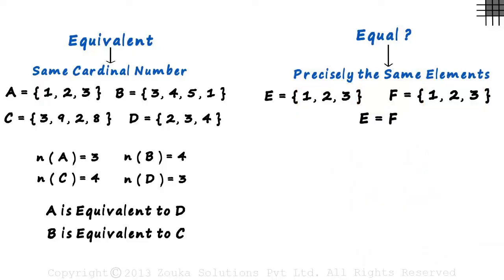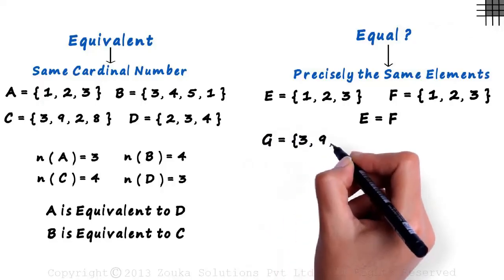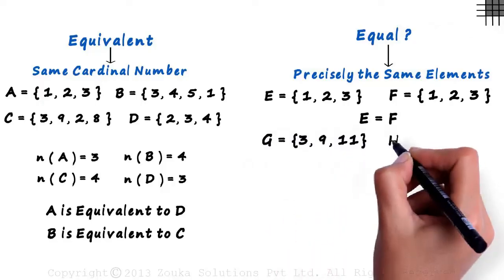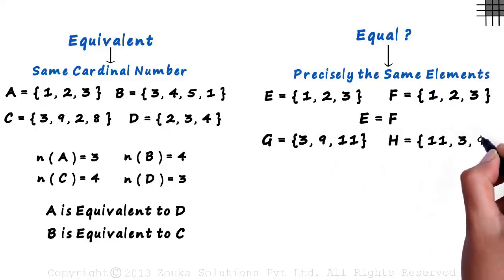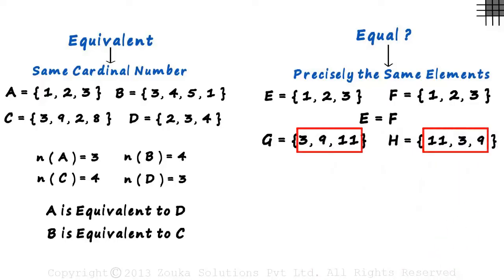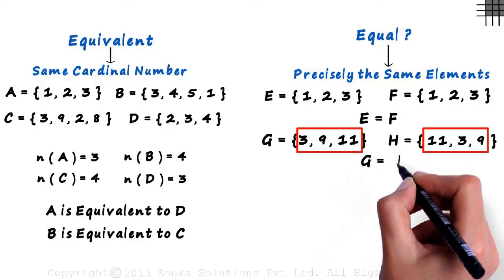Now consider two other sets. Set G with 3, 9 and 11 as its elements. And set H with 11, 3 and 9 as its elements. We can see that both the sets have the same three elements, 3, 9 and 11. So set G is equal to set H.